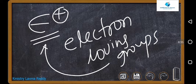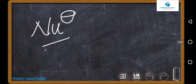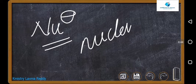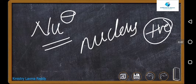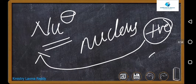Electrophiles are denoted by a plus charge. Nucleophiles are denoted by Nu minus. Nucleophiles are nucleus-loving groups. We know that the nucleus is positively charged, so positive-charge-loving groups are nucleophiles. Nucleus-loving groups are nucleophiles; electron-loving groups are electrophiles.